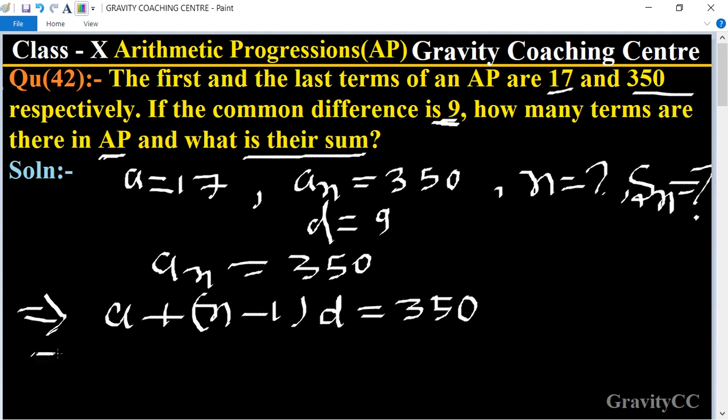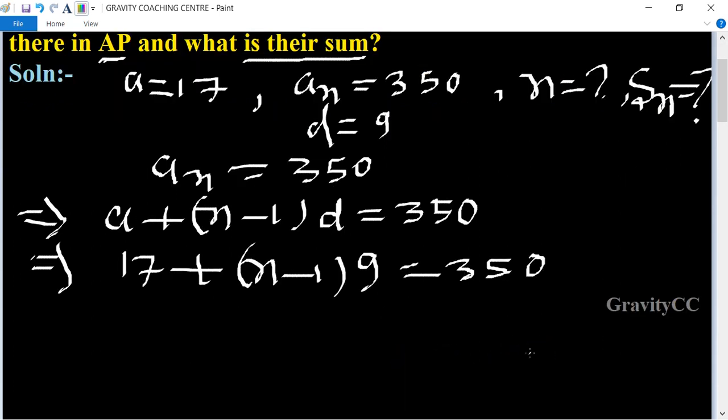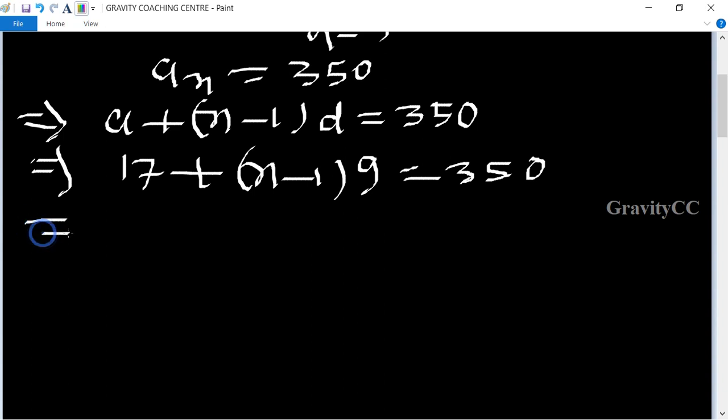Now we put the value of a and d. The value of a is 17 plus (n minus 1) into 9 equal to 350. This implies that 17 plus 9n minus 9 equal to 350.